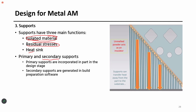Secondary supports are generated when you import the CAD model into the build software. When you are generating a G code for the machine, it figures out where you need support structures. It is always good to know where you need support structures and include them in the design stage itself — that's important because you can optimize the part and get the right quality part.